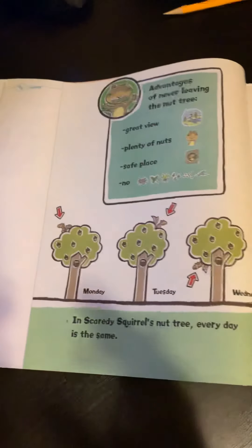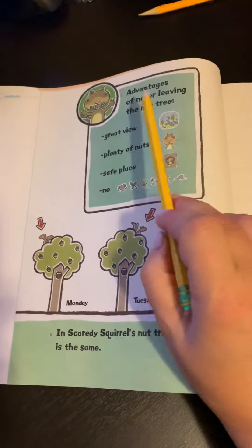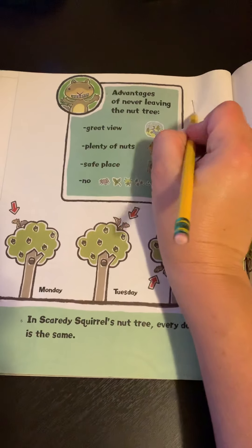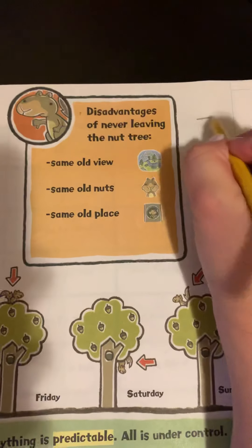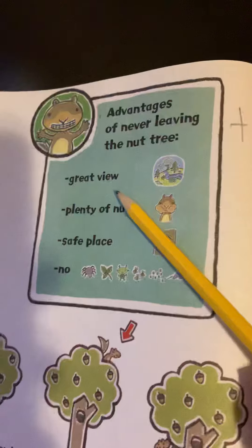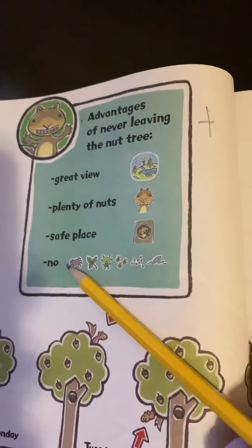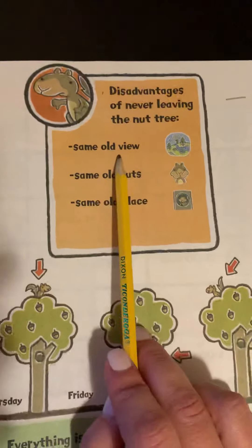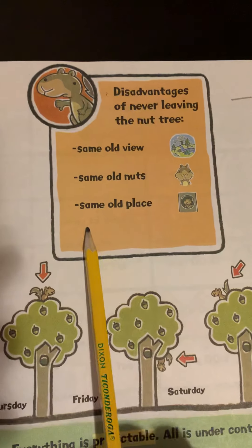That's where he got his name from — Scaredy Squirrel. Take a look at this picture here. We see advantages of never leaving the nut tree. Advantages are good things, positive things. Disadvantages of never leaving the nut tree — those are kind of negative things. The advantages of never leaving his tree are that he has a great view, plenty of nuts to eat, it's safe, and there's none of the things he's scared of. But the disadvantages — the negative things — are that it's the same old view, the same old nuts, and the same old place.